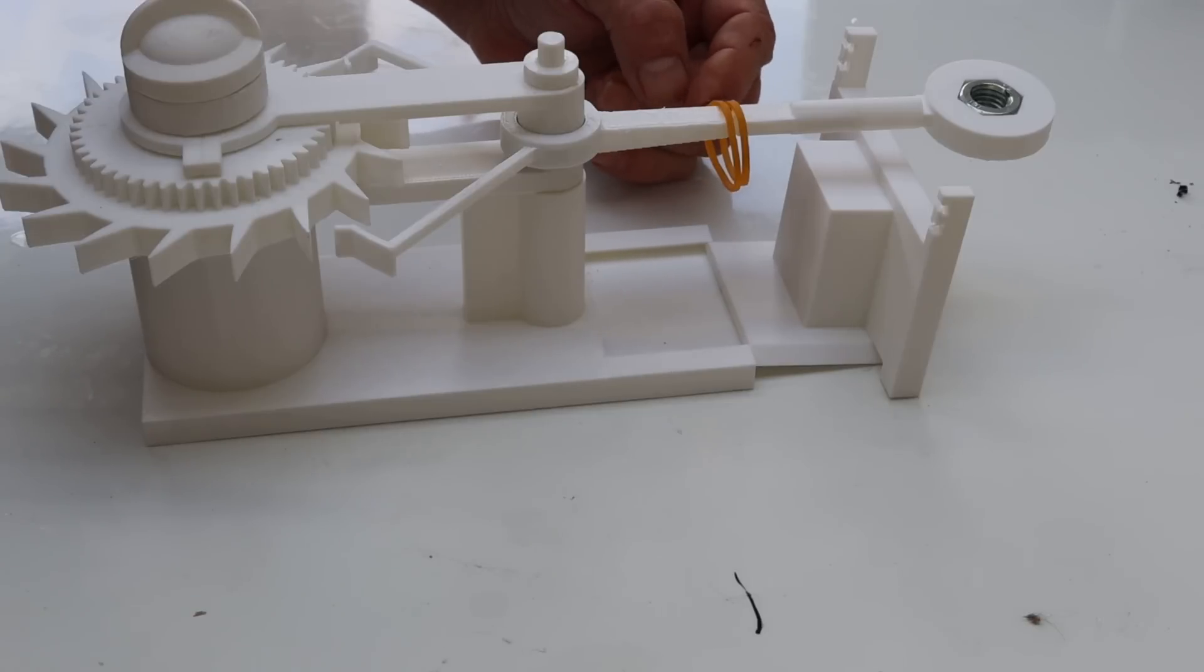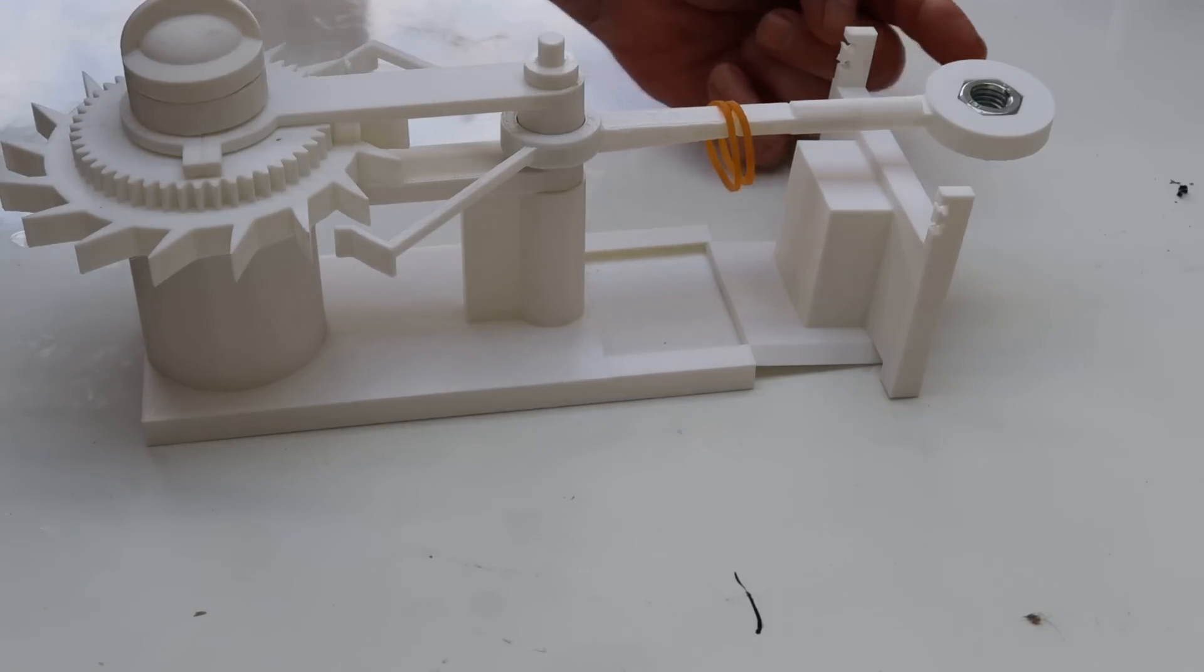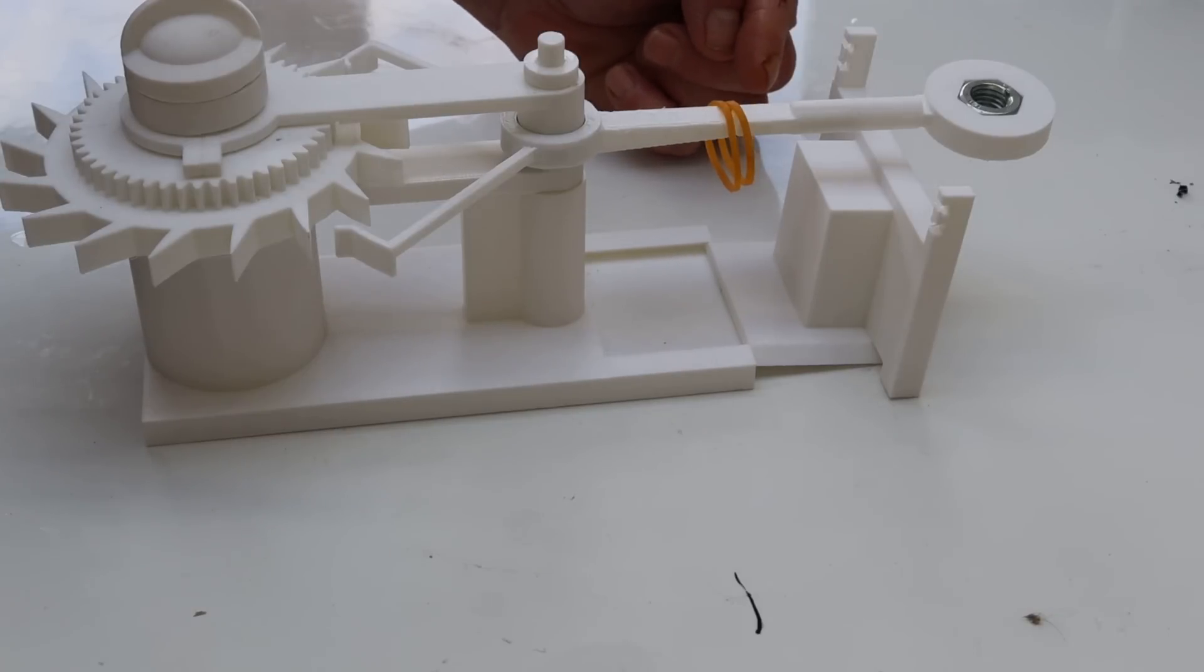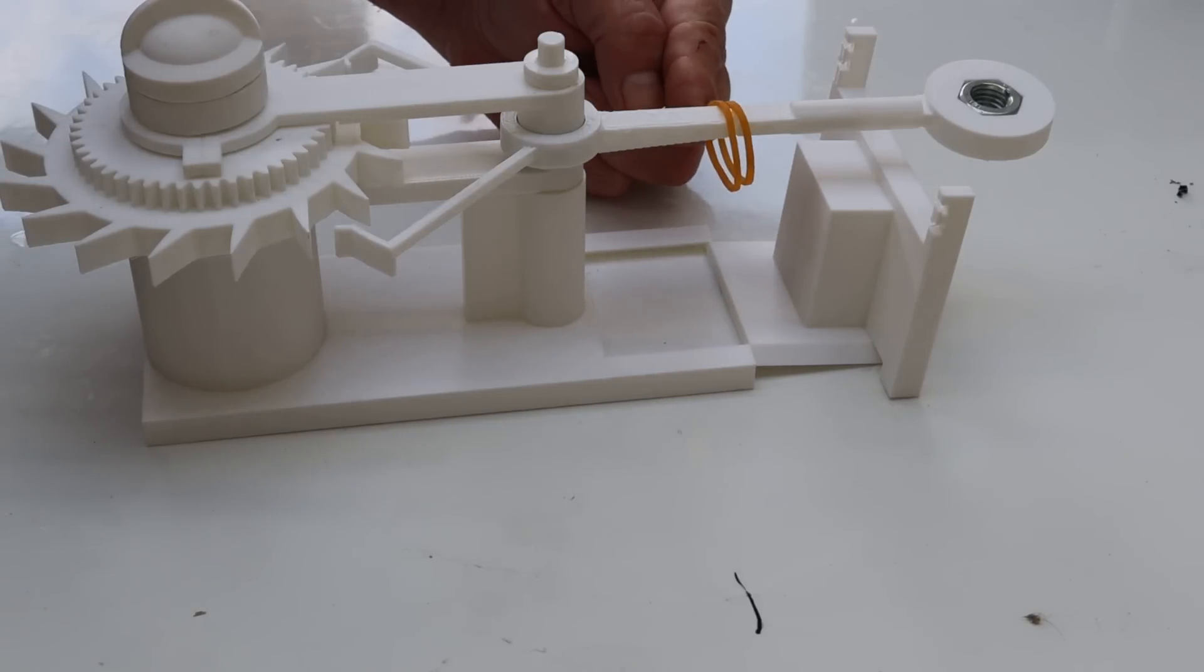So you can change that frequency by changing the amount of elasticity on the spring, or changing the weight, or doing both until you get the rate of oscillation that you actually want. The way we change the elasticity of these rubber bands is by sliding that slide backwards and forwards to either stretch them or not.